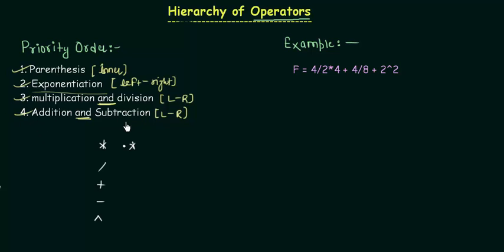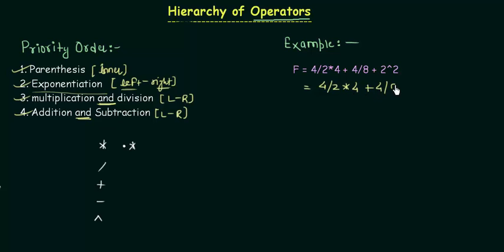This is all about the priority order. Now you can solve this example easily. The function f is given. The first thing is to check for parentheses — there are none. Next we check for exponentiation: there is one exponentiation, so no need to look for leftmost vs. rightmost — there is only one. We solve it first: 4 divided by 2, multiplication 4, plus 4 divided by 8, and 2 to the power 2 gives you 4. The next step is to solve multiplication and division.